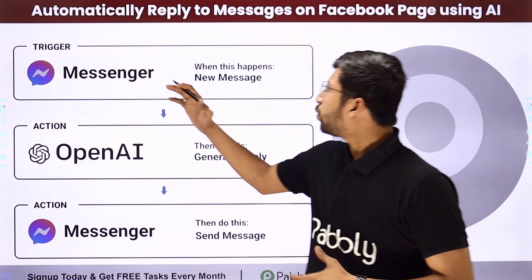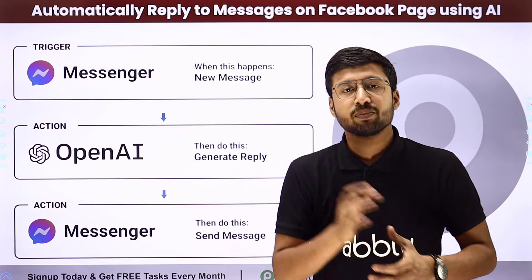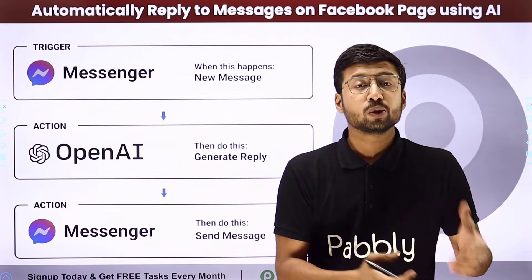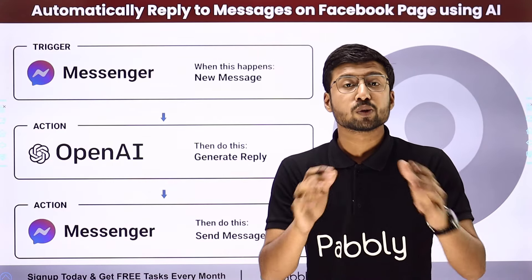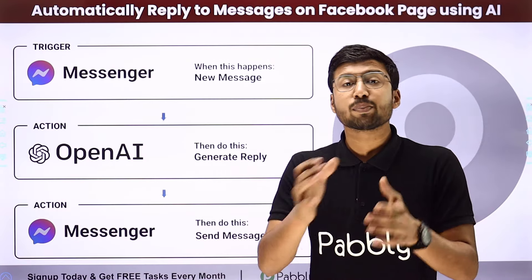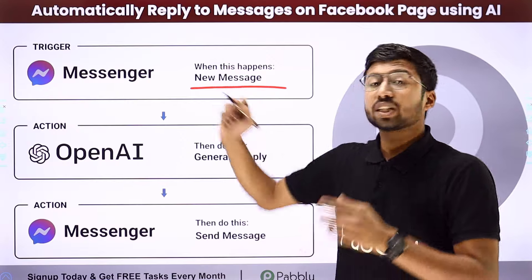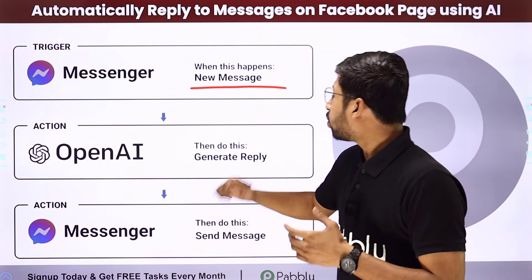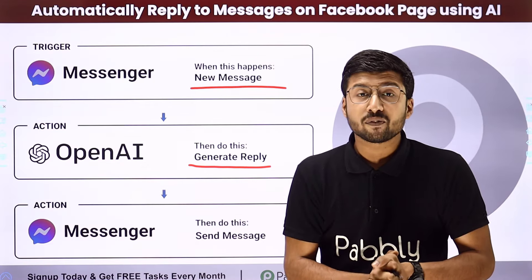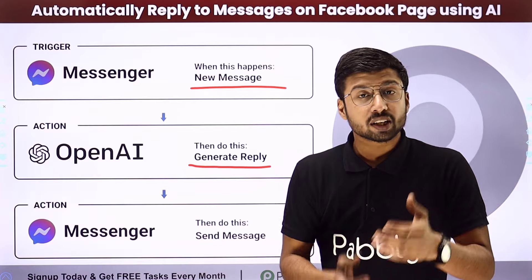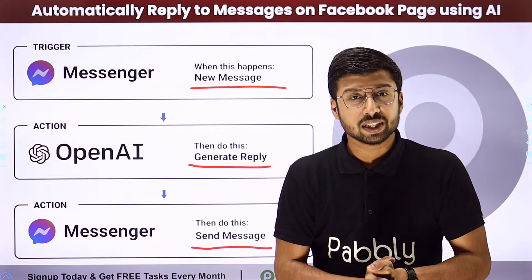In this video, we are going to learn how to automatically reply to messages on a Facebook page using AI. If you're receiving messages from users on your Facebook page, you can automatically reply to those messages as well. Whenever you receive a new message in Facebook Messenger, you can use OpenAI, ChatGPT, or any other AI platform of your choice to generate a reply and automatically send it back to the same person.